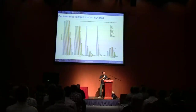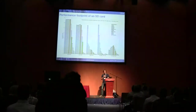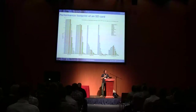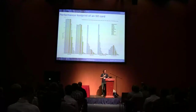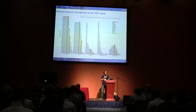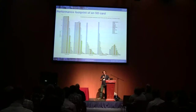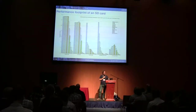What I found out was: first of all, reading is almost always fast if you read large enough blocks. 64 kilobytes seems to be the cutoff for this particular card and for many other cards. If you read 64K, it's always around 13 megabytes per second read.